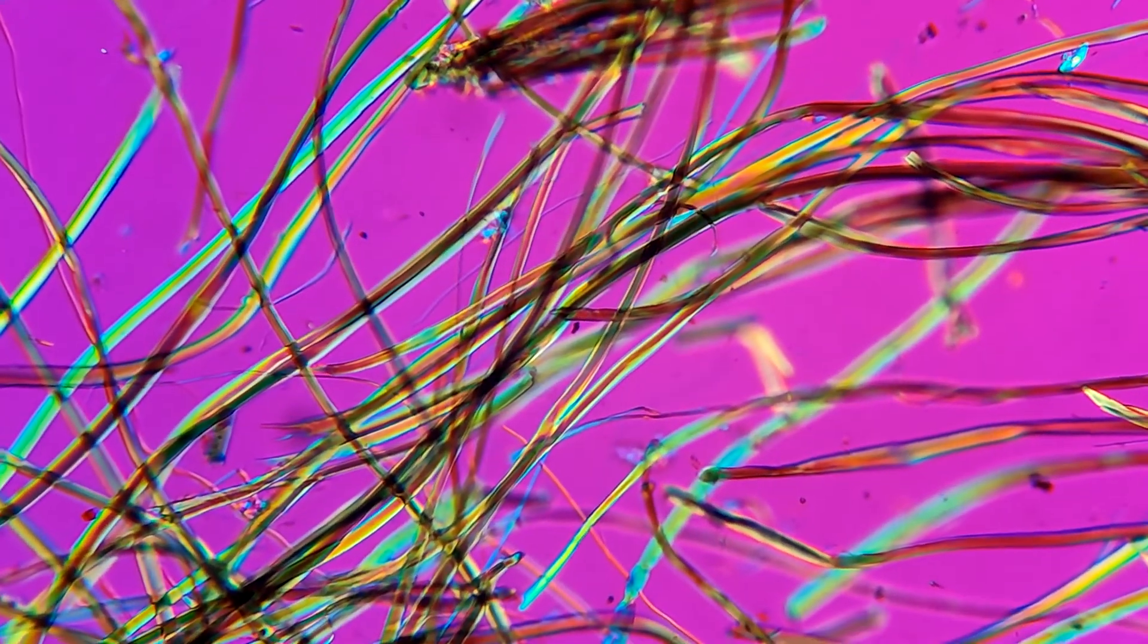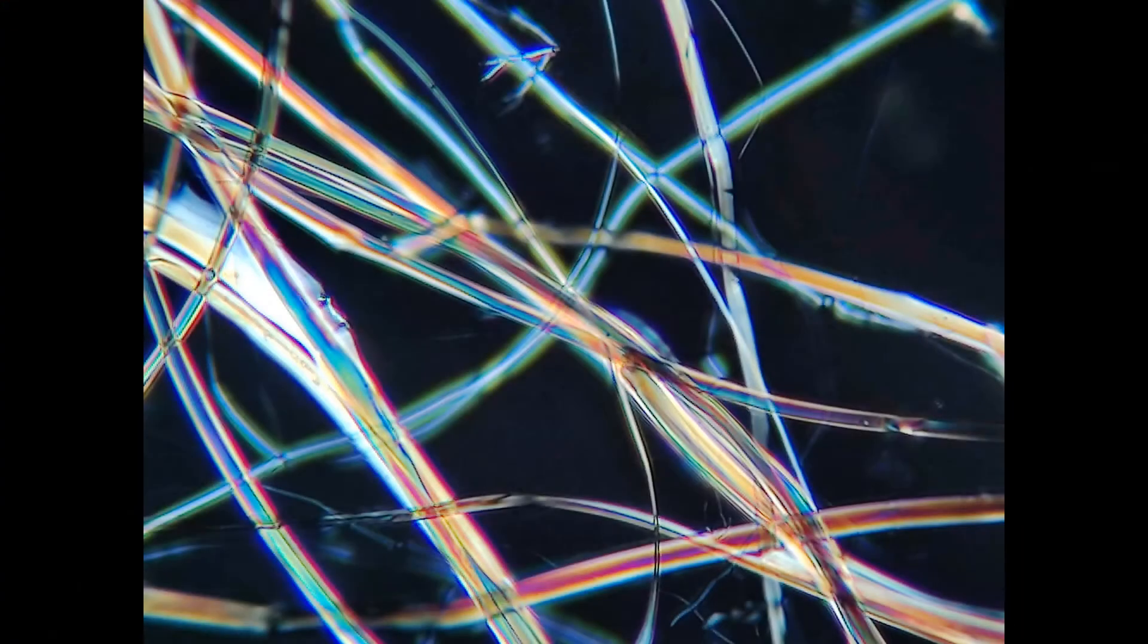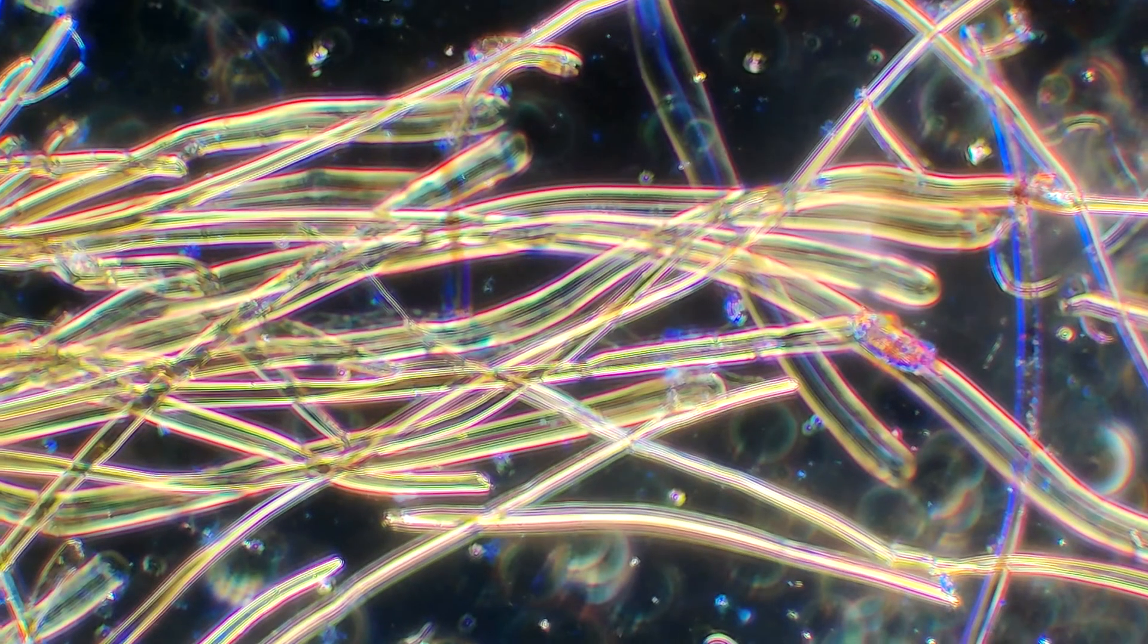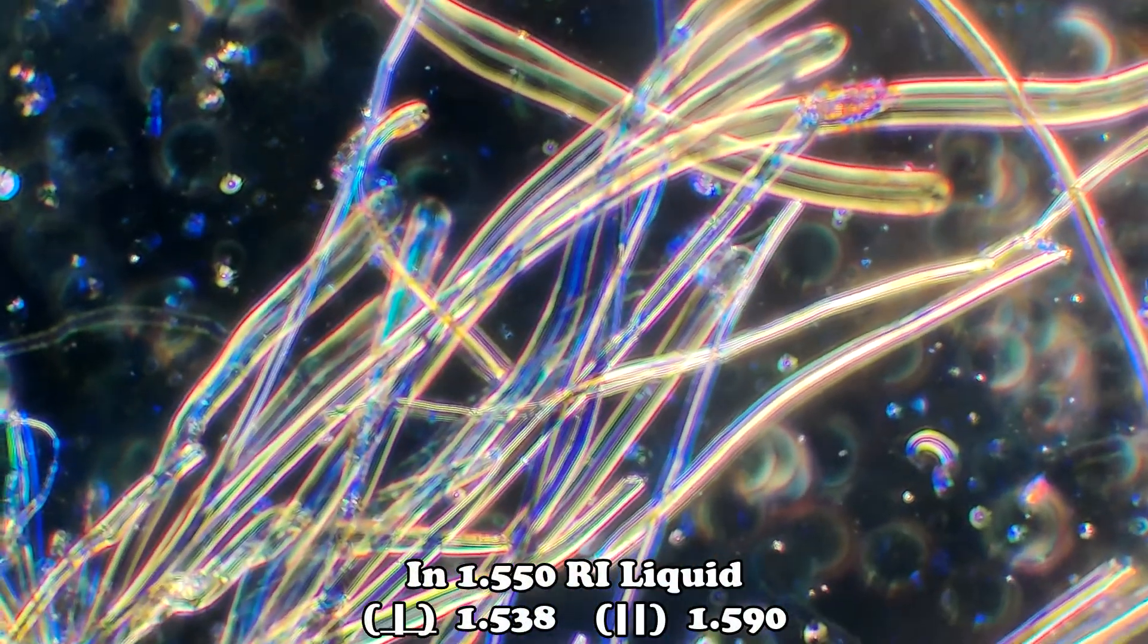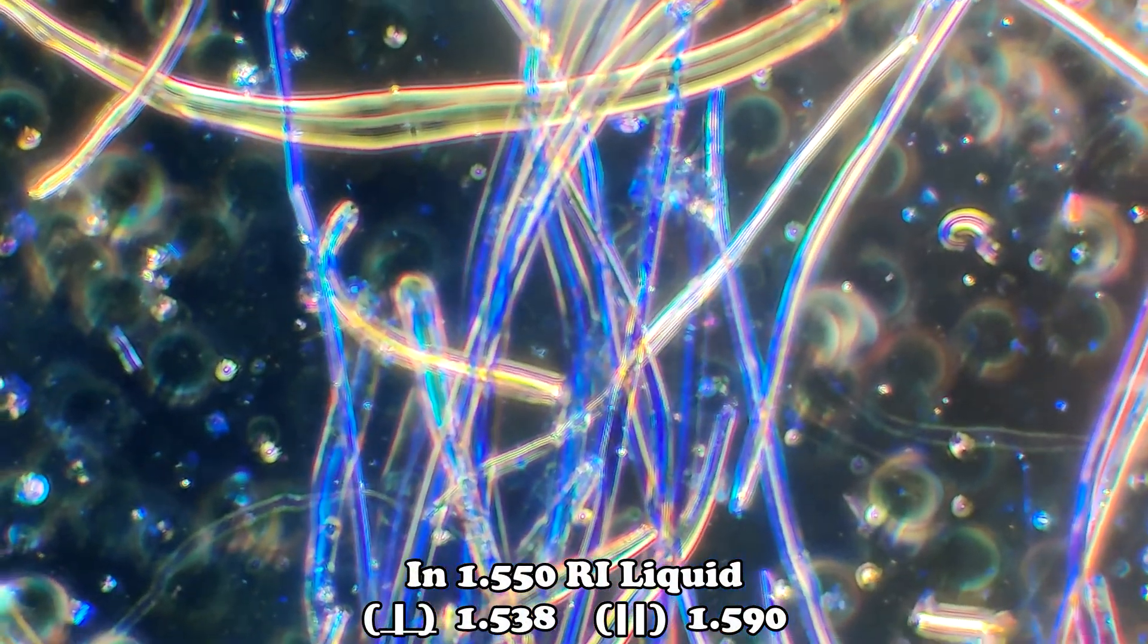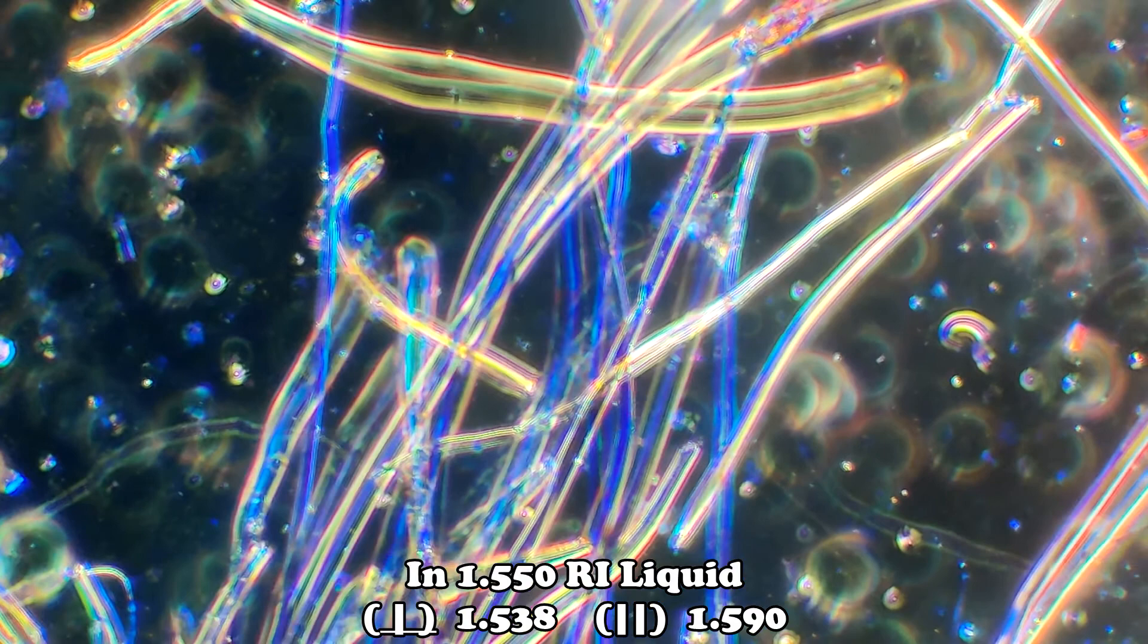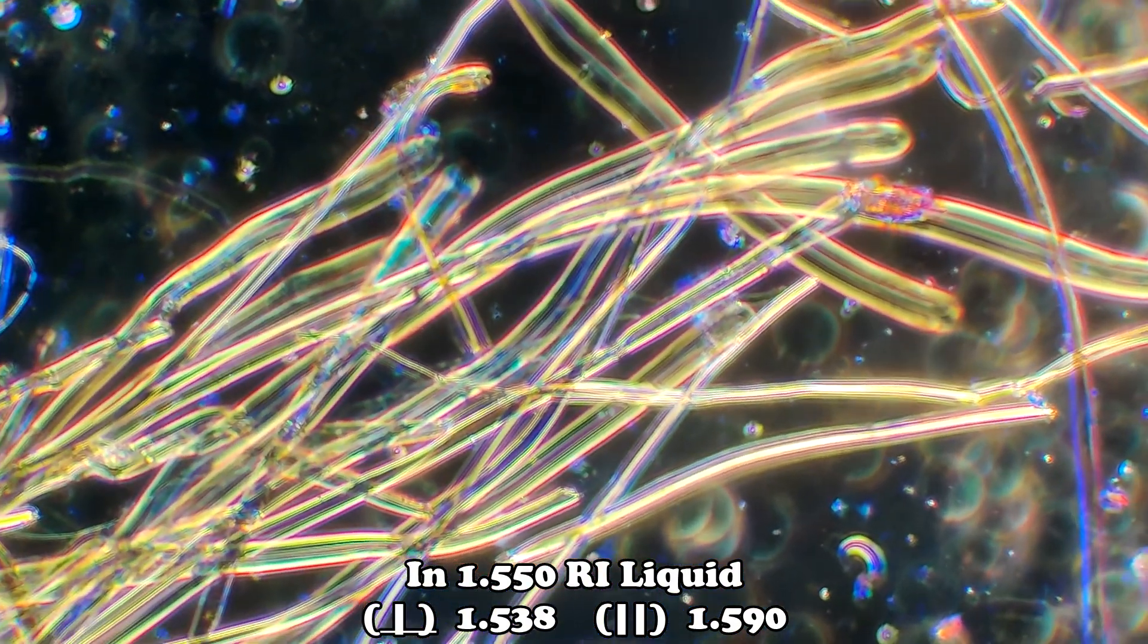Silk also exhibits a positive sign of elongation and a birefringence around 0.05 to 0.054. When it comes to identifying silk, you have to be careful when it comes to the refractive indices. Under dispersion staining, the colors mimic that of cellulose.